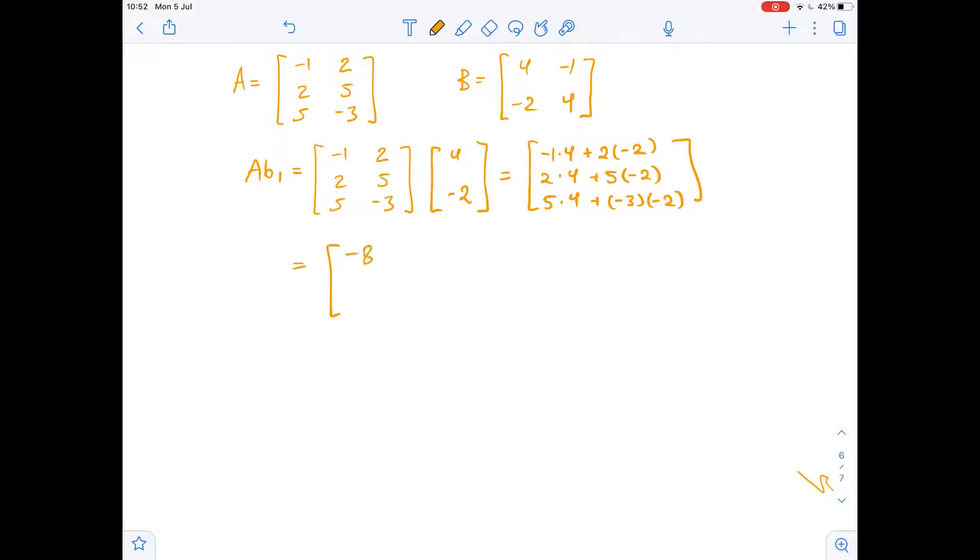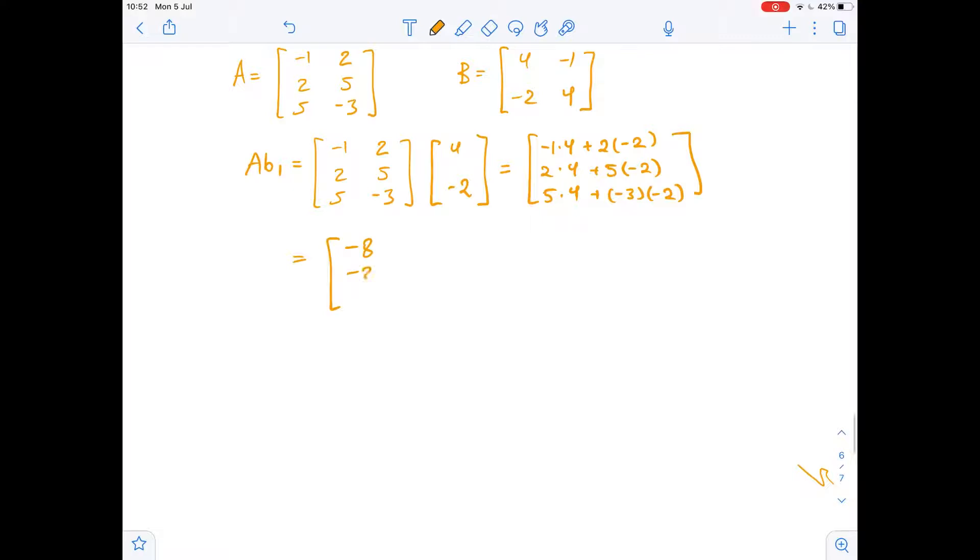So we got that AB1 equals negative 4 plus negative 4, which is negative 8, then 8 minus 10, which is negative 2, and 20 plus 6, which is 26.